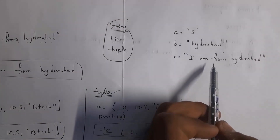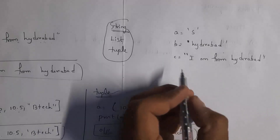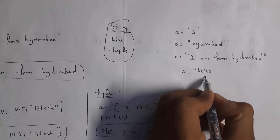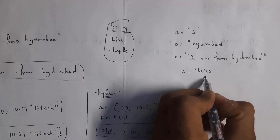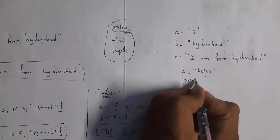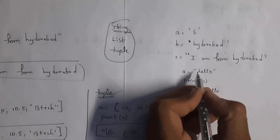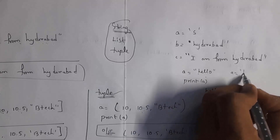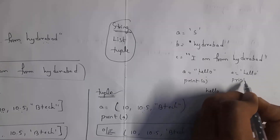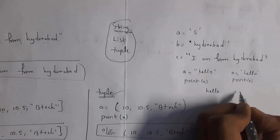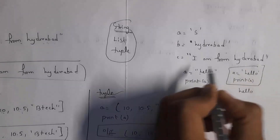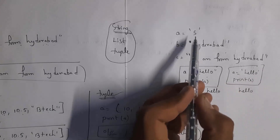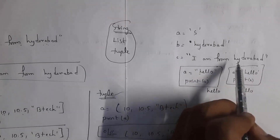Let's get started. Any letter, word, or sentence is considered as a string, and we represent a string in either single quotations or double quotations. For example, I written a equal to hello in double quotations. Whenever you write print a, you will get output hello. In place of double quotations, you can also use single quotations and get the same output.